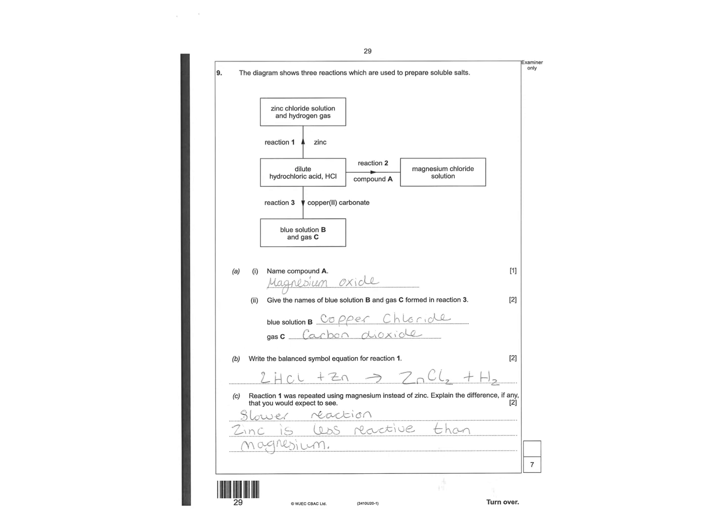Name compound A. Compound A is going to be something plus hydrochloric acid will give you magnesium chloride solution. Implies that there's water so it's gonna be magnesium oxide. Give the name of the blue solution B and the gas formed in reaction C. The blue solution is going to be copper chloride because it's hydrochloric acid and the gas because it's carbonate is going to be CO2. Write a balanced symbol equation for reaction one. You've got hydrochloric acid plus zinc makes zinc chloride plus H2. Make sure you top swap drop that.